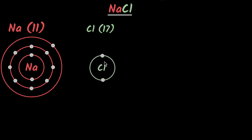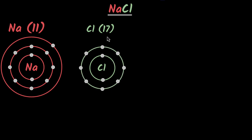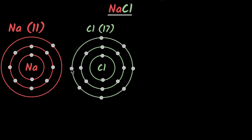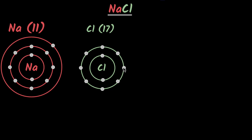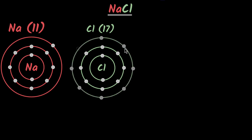We start with the first two in the first shell, then the next eight — so we are done with 10 — and now we have the remaining seven, which comes in the last shell. As chlorine, how would we achieve octet? We could either get rid of all seven electrons, but that's so hard. Instead, if somebody gave us one more electron, we would complete the octet of the third shell and be stable.